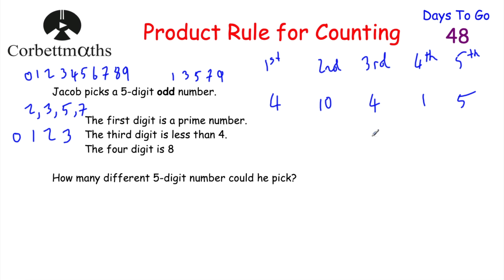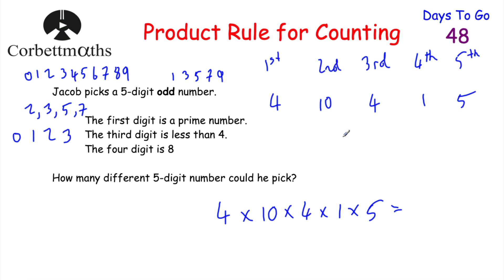So Jacob has four choices for the first digit, ten for the second, four for the third, one for the fourth, and five for the last digit. To find how many different five-digit numbers he could pick, we do 4 × 10 × 4 × 1 × 5 = 800. Jacob has 800 possible numbers he can make. If you got that, well done.